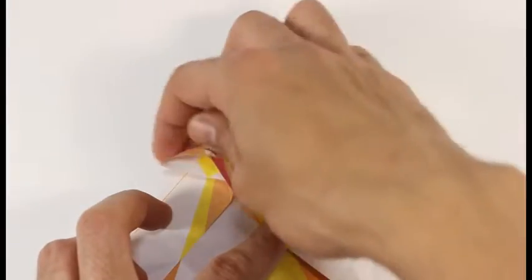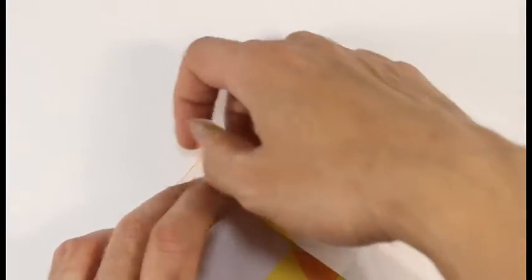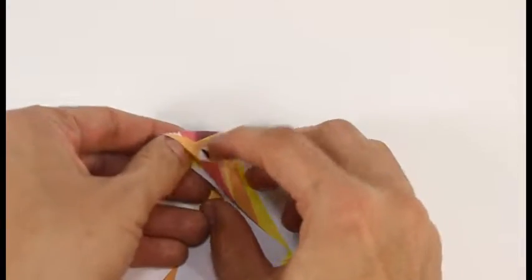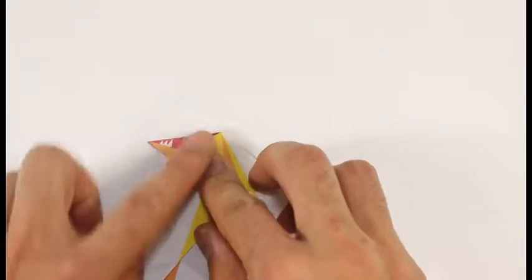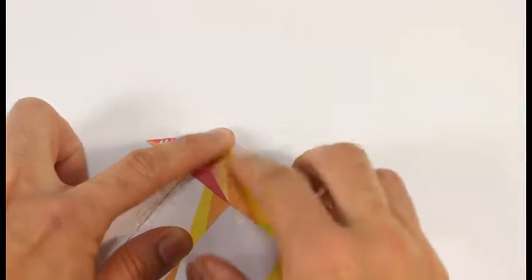Fold the other edge down. And the remaining flap forms a triangle, which we're going to fold to one side.